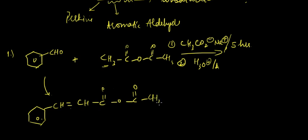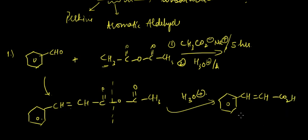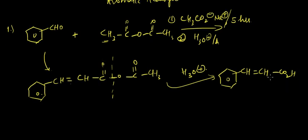On passing acid medium secondly, the cleavage across this bond will take place, and as a result we'll be getting something like this: Ph-CH=CH-CO2H. This is known as alpha-beta unsaturated acid.